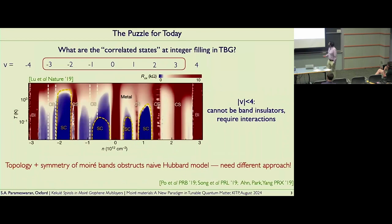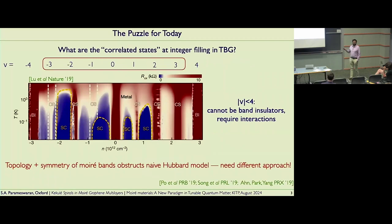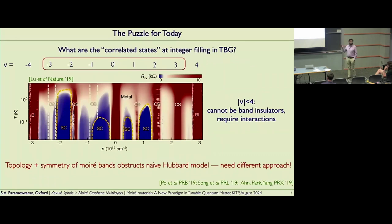It's a relatively short talk. I just want to talk about a single puzzle, which goes back to the very early days — arguably the very first paper on moiré graphene — which is this idea that you see correlated insulator states at integer fillings within the flat bands. We know that these can't be band insulators for a myriad of reasons and that they require interactions. So the question I want to ask is: what is the nature of these correlated insulator states?